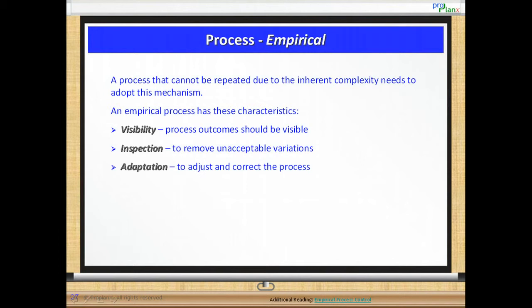Testing and product review leads to the inspection whereas adaptation happens through the various feedback mechanisms in Agile. We discuss feedback mechanisms extensively in the Agile closure chapter later on.